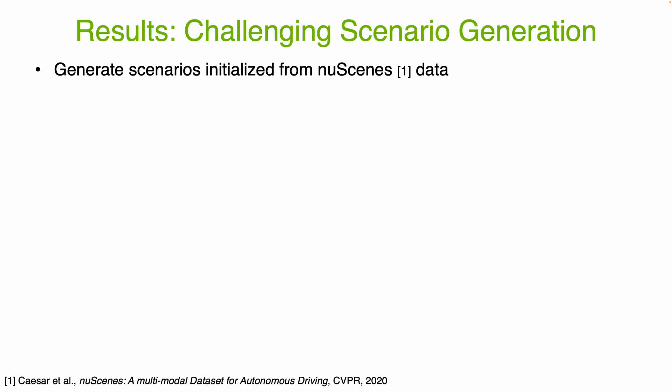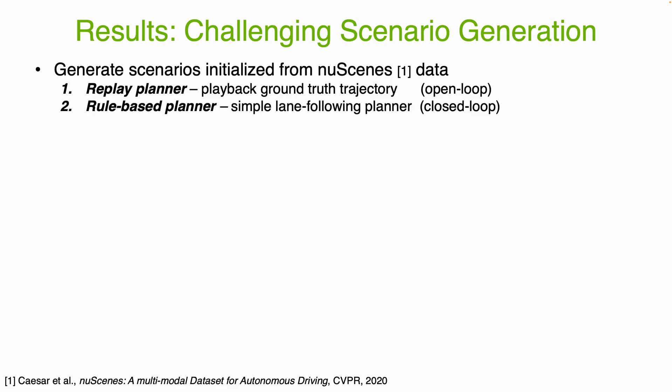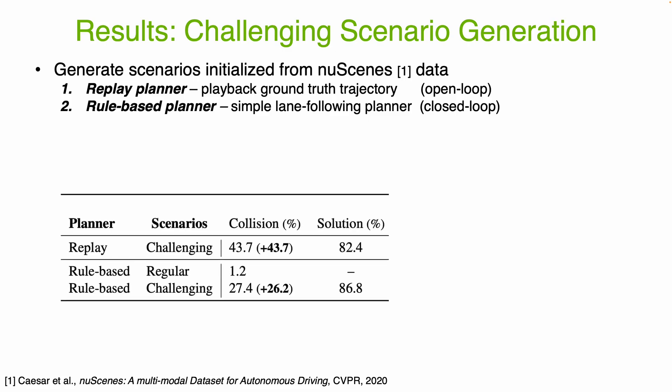We use Strive to generate a large set of collision scenarios seeded by the nuScenes dataset. We evaluated performance on two different planners: first, the so-called replay planner, which is simply the ground truth trajectory from the data played back; and second, a more realistic, rule-based planner which operates in a closed-loop fashion, making it more challenging to attack. On both planners, we find that Strive generates collisions with a high success rate, and a majority of challenging scenarios are useful, as indicated by the solution optimization success rate.